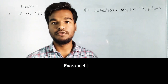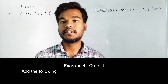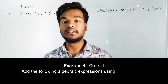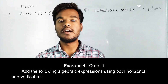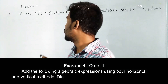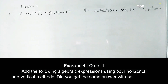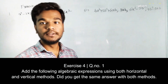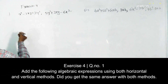Hello viewers, in this module we are going to discuss the solutions for exercise four, first question. They have given algebraic expressions and want us to calculate addition by the horizontal and vertical method. We will check if both methods give the same answer. First we will do the horizontal method, then the vertical one.